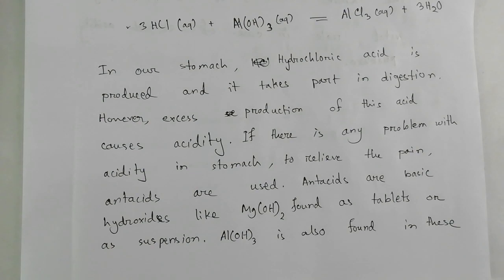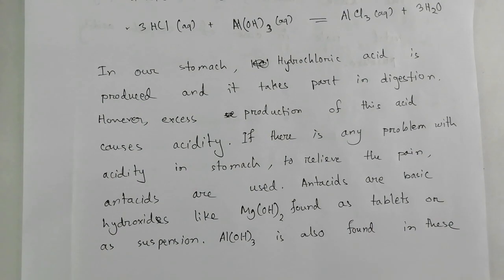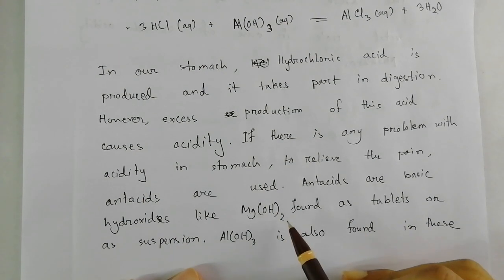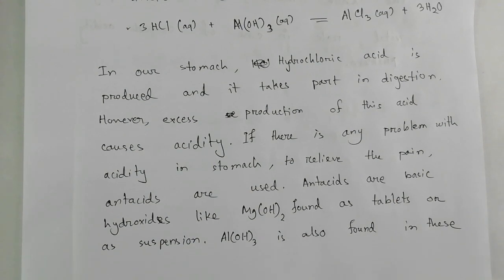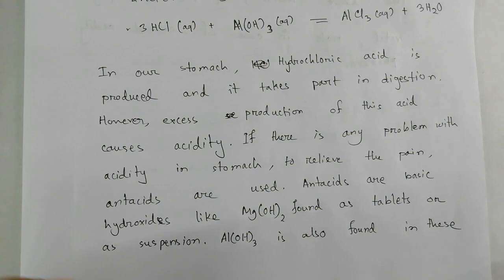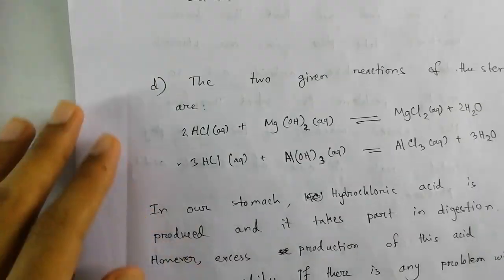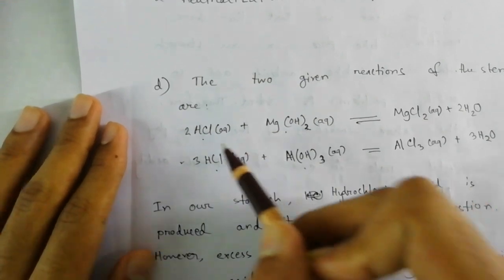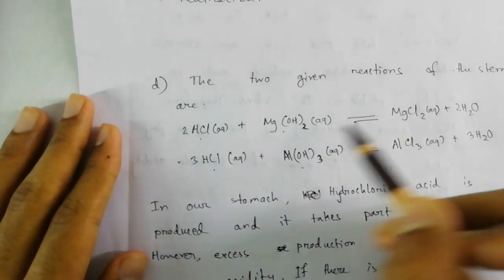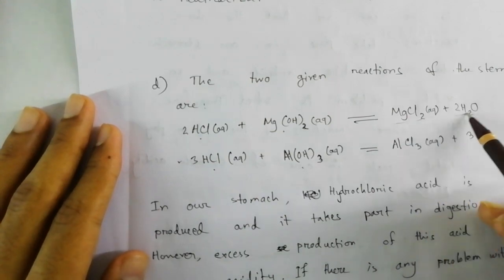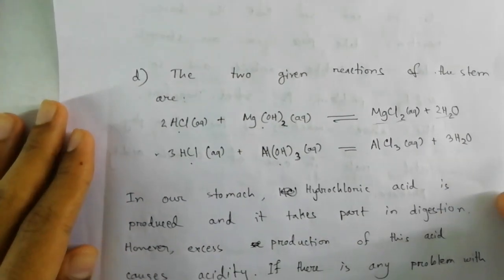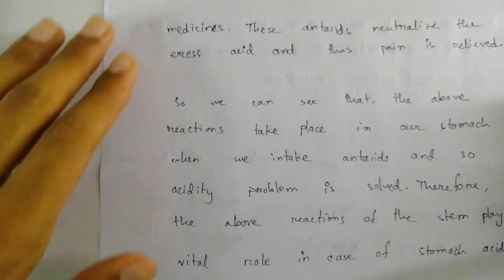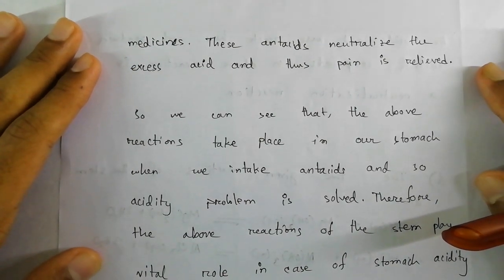To relieve the pain, we need to neutralize this acid. Doctors may suggest taking antacids. The chemical compounds in antacids are basic hydroxides — like magnesium hydroxide, available as tablets or suspensions such as milk of magnesia, and aluminum hydroxide, also found in these tablets. When there is excess HCl and the tablet contains Mg(OH)₂ and Al(OH)₃, neutralization reactions occur, and the acids lose their corrosive properties and convert into salt and water.